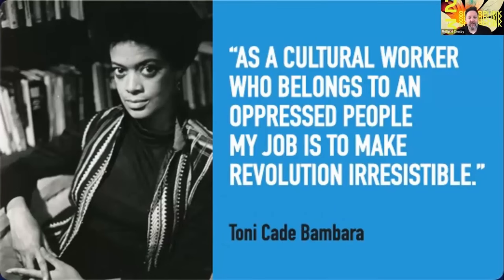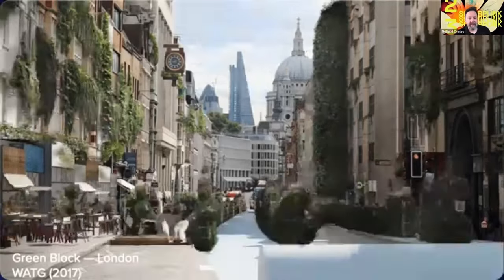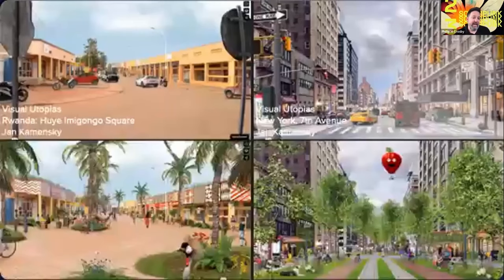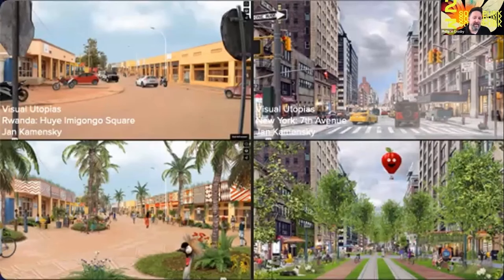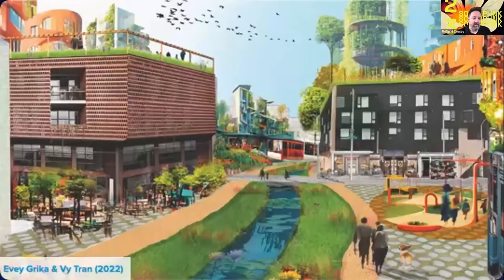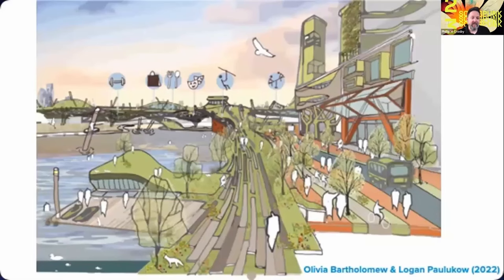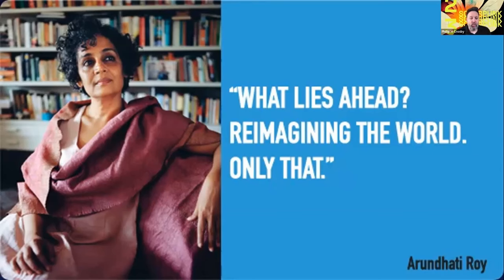So as Toni Cade Bambara says, our job is to "make the revolution irresistible" — through stories, artwork, and concrete actions that create visions of the decarbonized future so compelling as to be irresistible: visions like this project by the architecture firm WATG, which reimagines Fleet Street in London, and the amazing series of short films called Visual Utopias by Jan Kaminsky, which reimagines streets around the world, or the work being done by my urban design students, which reintroduce nature to the city in productive ways. I hope these projects are compelling and irresistible, and will help bring about a solarpunk future. I'll close with my favorite quote from Arundhati Roy: "What lies ahead?" she asks. "Reimagining the world. Only that." Thank you.